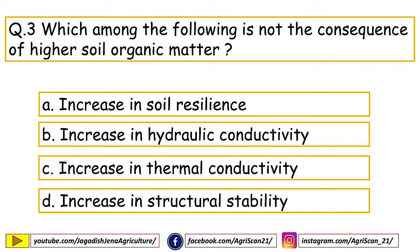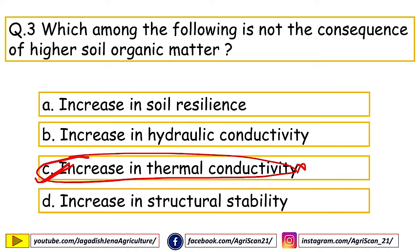Next question: which among the following is NOT a consequence of higher soil organic matter? Options are increase in soil resilience, increase in hydraulic conductivity, increase in thermal conductivity, increase in structural stability. The right answer is increase in thermal conductivity. Higher soil organic matter content leads to higher resilience, increased hydraulic conductivity, and increased structural stability.